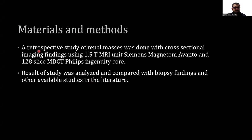Materials and methods. A retrospective study of renal masses was done with cross-sectional imaging findings using a 1.5 tesla MRI unit Siemens Magnetum Avento and 120-slice MDCT Philips Ingenuity Core. Results of the study were analyzed and compared with biopsy findings and other available studies in the literature.